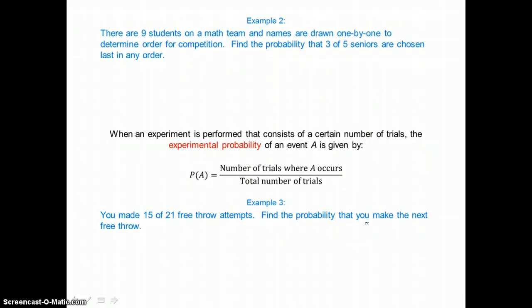In example 2 there are 9 students on a math team and names are drawn one by one to determine order for competition. We want to find the probability that 3 of 5 seniors are chosen last in any order. Well one of the key words here is chosen. Our successes on the top are going to be found by choosing 3 from 5, 3 seniors from 5 seniors that are on this math team. Our possibilities are going to be choosing 3 students from 9 total students on that math team.